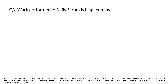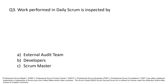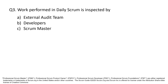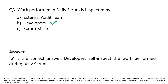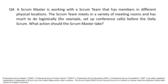Question 3. Work performed in Daily Scrum is inspected by: A. External Audit Team. B. Developers. C. Scrum Master. Option B is the correct answer. Developers self-inspect the work performed during Daily Scrum.